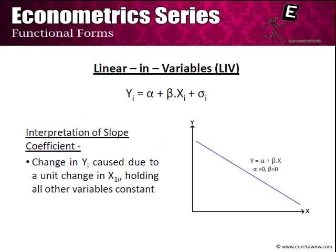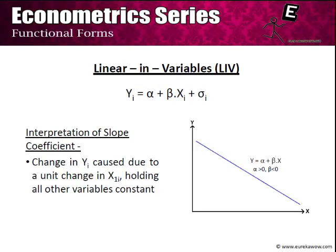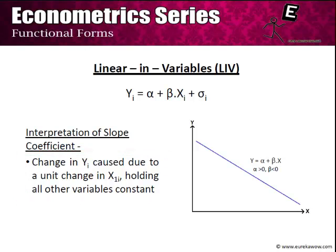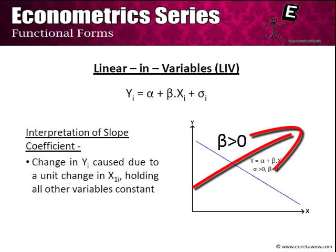What we have been considering till now is a linear-in-variables model of the form yi = α + β·xi + εi. We can add more independent variables, but β still represents a linear relationship — for every one unit change in xi, yi changes by β units, ceteris paribus. Graphically, if β < 0 we get a downward-sloping straight line, and if β > 0 we get an upward-sloping straight line.